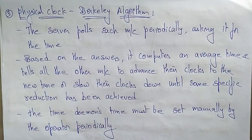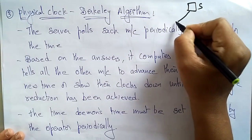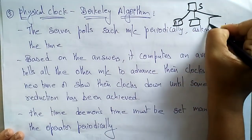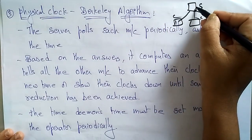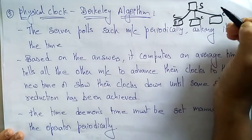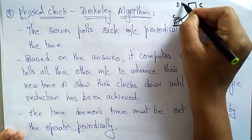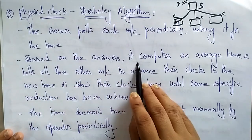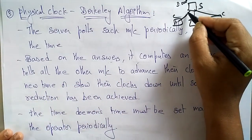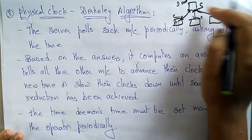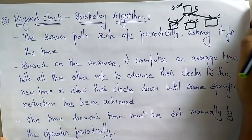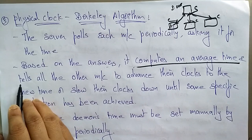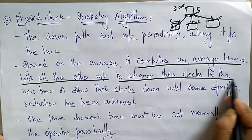The technique it follows is to maintain systems in a distributed environment in sync. The server asks all the client systems: what is your system time? Based on the answers, it computes an average time, and then tells all other machines to advance their clocks or slow their clocks down to the new time.